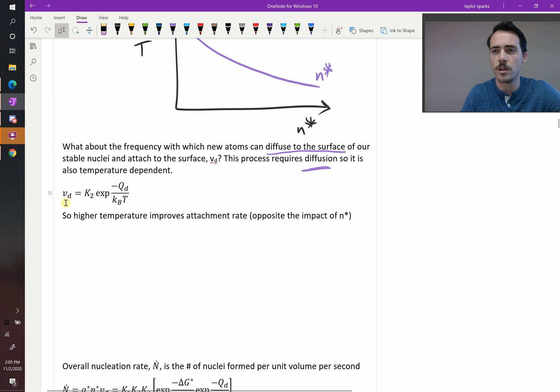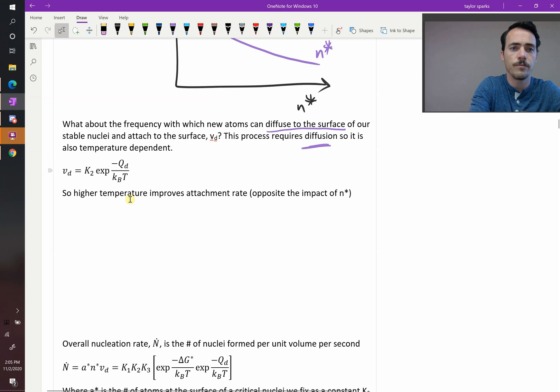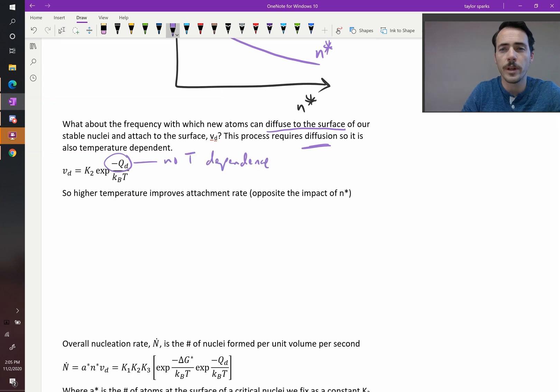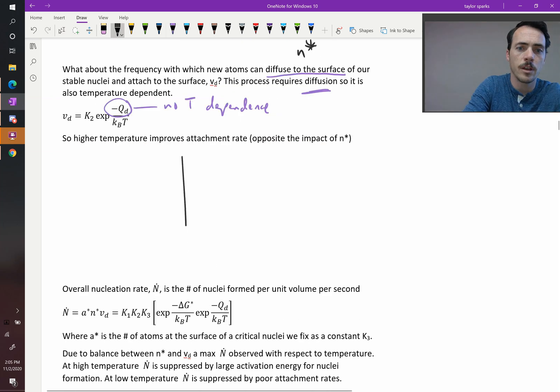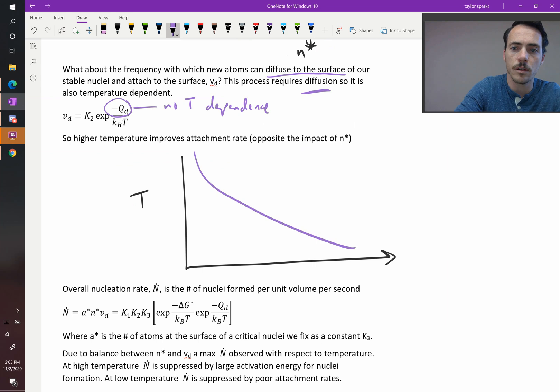So the expression for V sub D, our attachment frequency, is going to be equal to K2, some constant, multiplied by the exponential of our activation energy for diffusion divided by thermal energy. And since activation for energy of diffusion, this thing is not temperature-dependent, therefore we'd expect this curve to look slightly different than the previous one. Again, plotting it as a function of temperature, we already know that N-star looks like this. The amount down here on the x-axis.